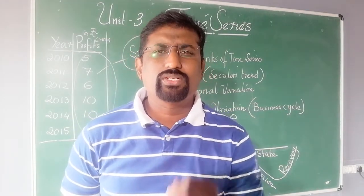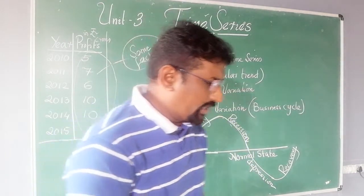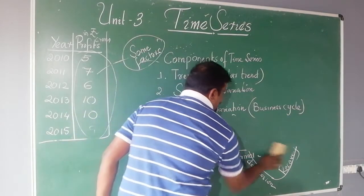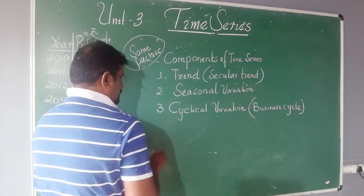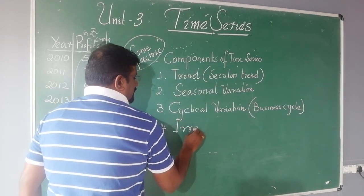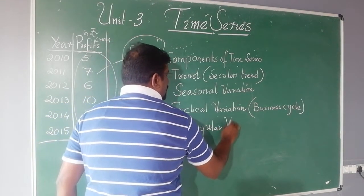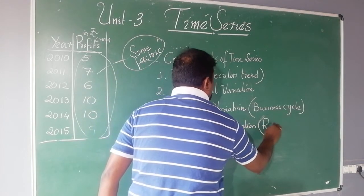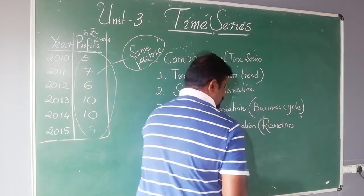This is the third variation — cyclical variation. Now the fourth one: it is called irregular variation, and it is also called random fluctuation.